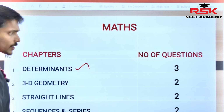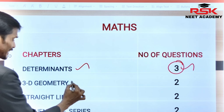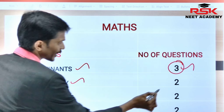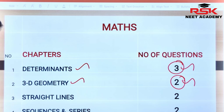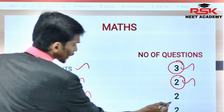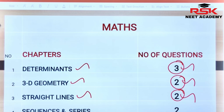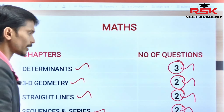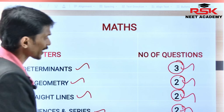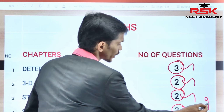In maths, determinants carry three questions. 3D geometry has two questions possible. Straight lines also have two questions possible. Sequence and series — these are also possible. These four chapters together give around nine questions.